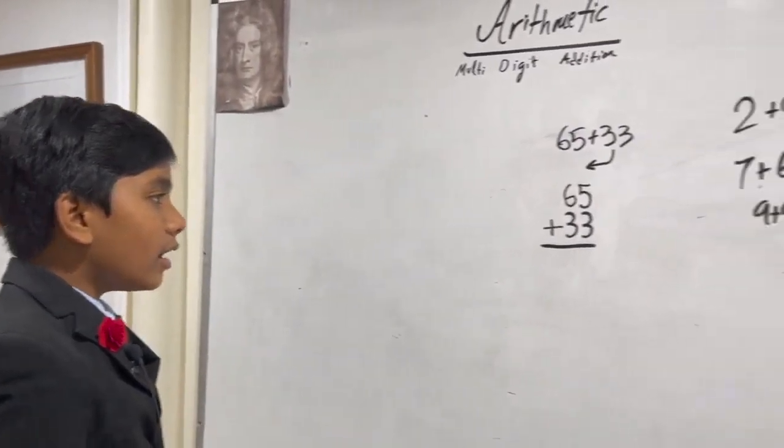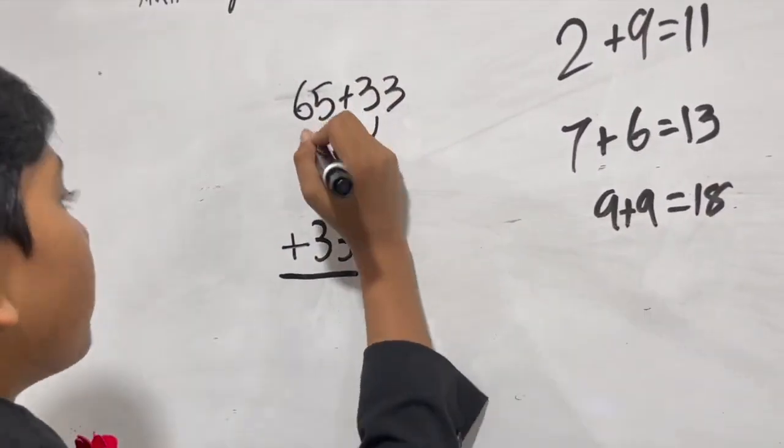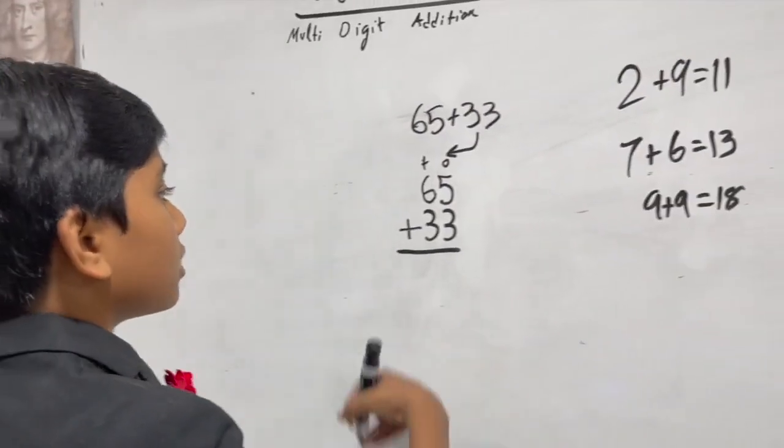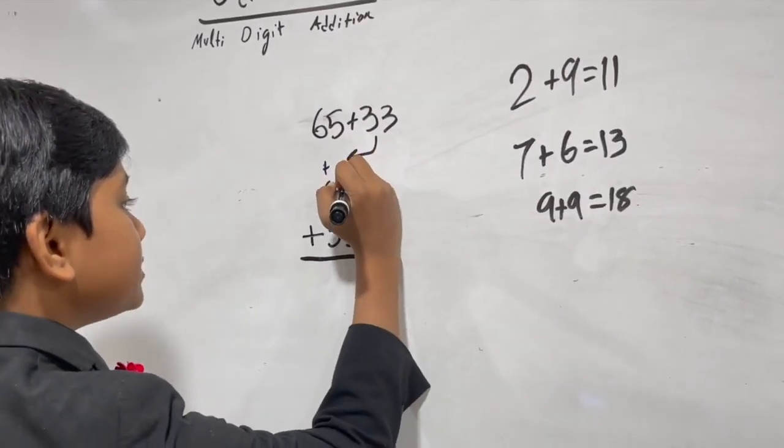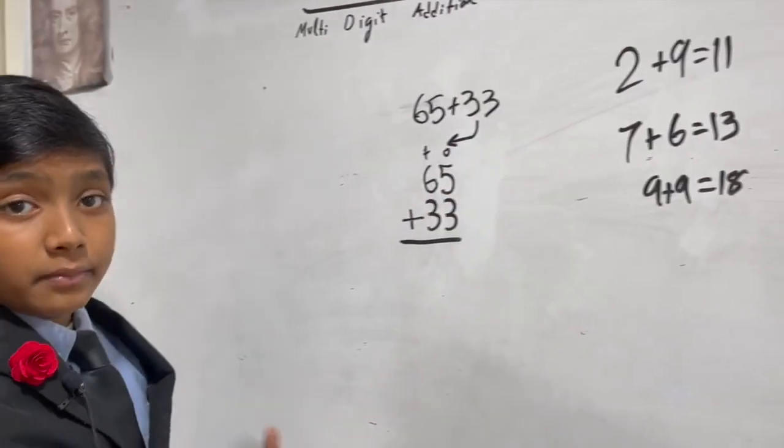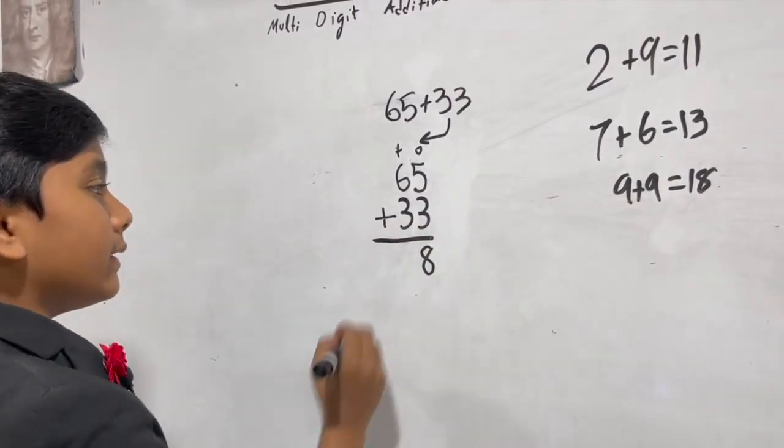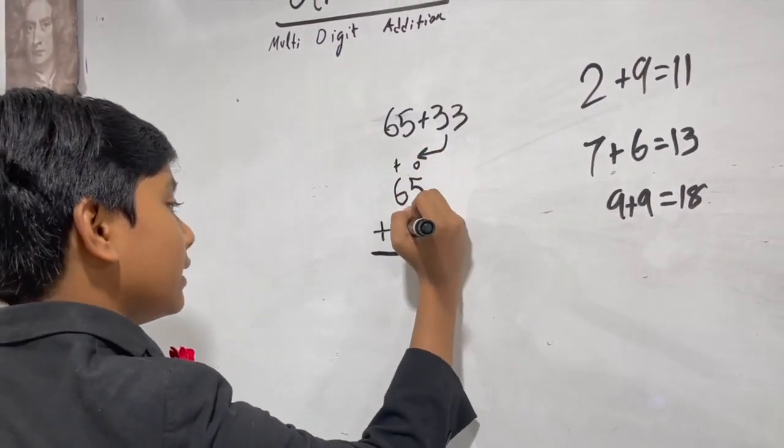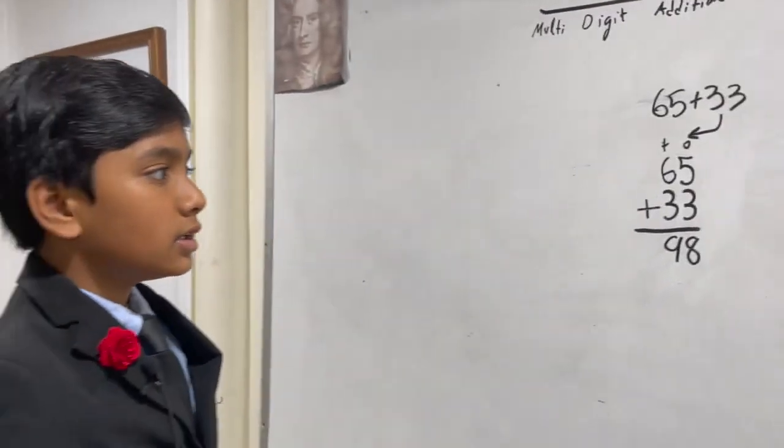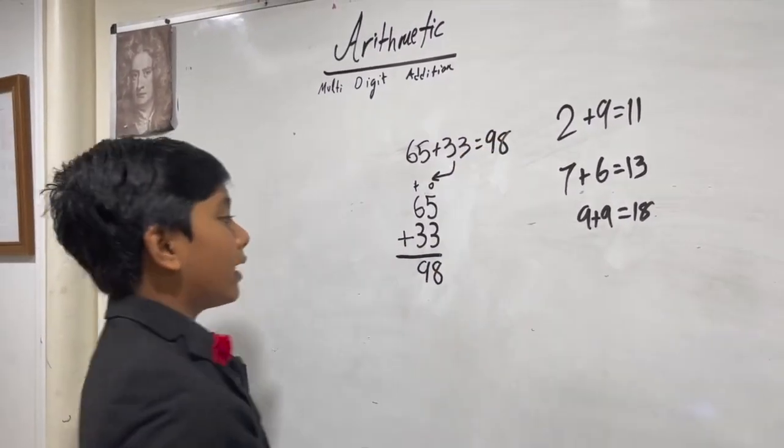Okay. Now, we're going to do this column by column or place by place. We have the one's place and the ten's place. So, in the one's place, we have 5 plus 3. Now, 5 plus 3 is obviously 8. And then, in the ten's place, we have 6 and 3. Adding them gives you 9. So, boom. 65 and 33 is 98.